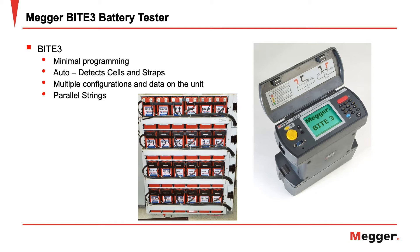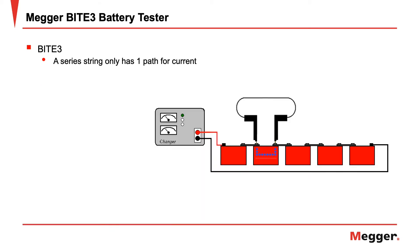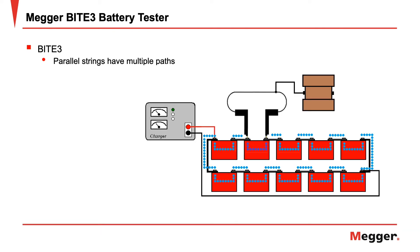The Byte 3 can test parallel strings without any need to segment the strings. When testing a series string, the test current only has one path it flows through. In parallel strings, the test current will have multiple paths to flow through. As one cell's impedance changes, it changes the current flow through each string, which changes the measurement on all the cells, making locating the poor cell impossible.